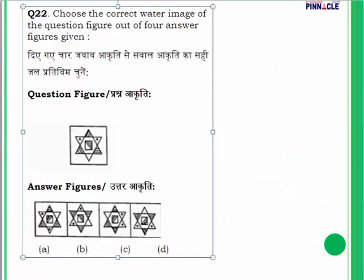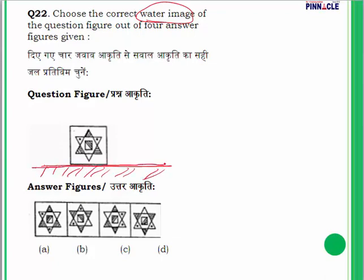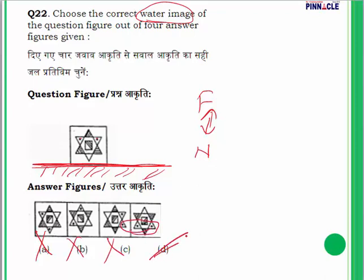Question number 22: choose the correct water image. In a water image, the top becomes the bottom — things far away become near and near become far. The two dots that are in the upper part of the figure must appear at the bottom in the water image. This is present in option D. Option D is the correct answer.